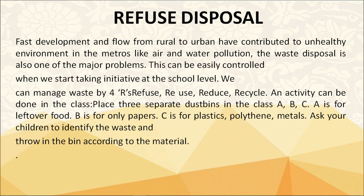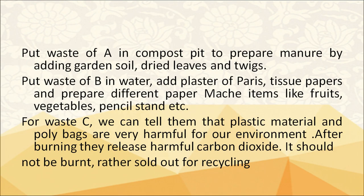An activity can be done in class: the teacher places three separate dustbins labeled A, B, and C. Dustbin A is for leftover food, B is only for papers, and C is for plastics, polythene and metals. Children identify and sort waste into the correct bin. Waste from A can be put in a compost pit with garden soil, dried leaves and twigs to prepare manure. Waste from B can be soaked in water with plaster of paris to make paper mache items. For waste C, children are taught that plastic and poly bags are harmful — after burning they release harmful carbon dioxide — so they should be sold for recycling.